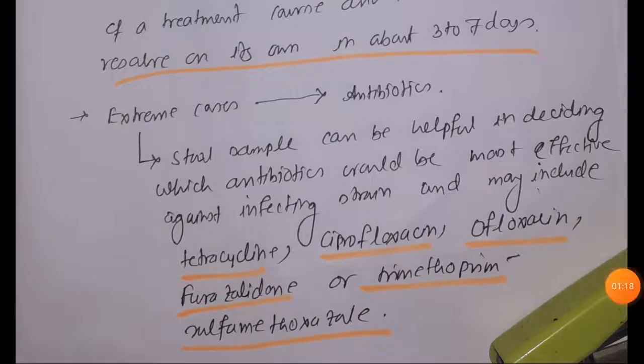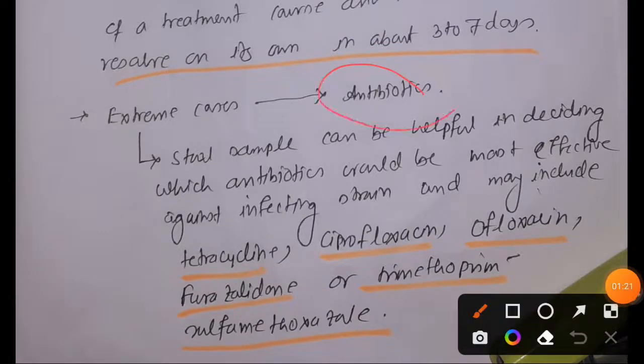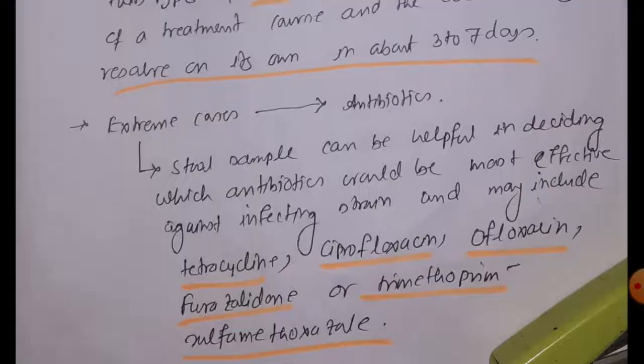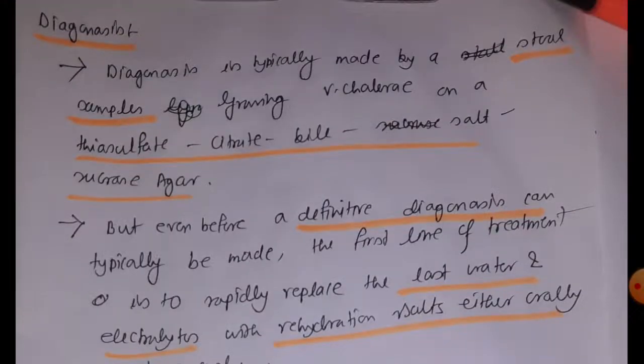antibiotics, and the type of antibiotic should be dependent on the type of stool sample. We can use tetracycline, ciprofloxacin, ofloxacin, furazolidone, or trimethoprim-sulfamethoxazole as an antibiotic. That was the diagnosis as well as treatment for Vibrio cholerae.